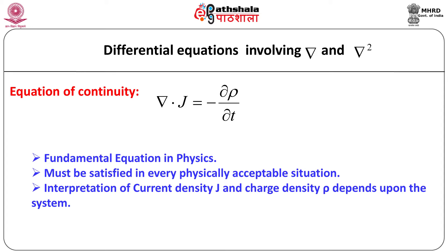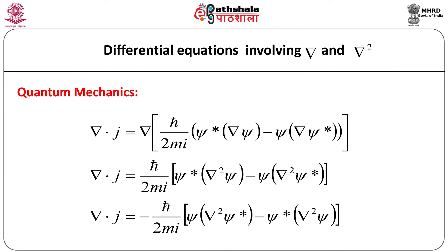There are many differential equations involving del and del square. As an example, let us consider the equation of continuity: del dot J equals minus d-rho/dt. Please note that this is a fundamental equation in physics — it must be satisfied in every physically acceptable situation. The interpretation of current density J and charge density rho depends upon the system. In quantum mechanics, the divergence of J is given in terms of the wave function psi and the gradient of psi. The current density J here corresponds to the number of particles crossing the potential barrier at a boundary.